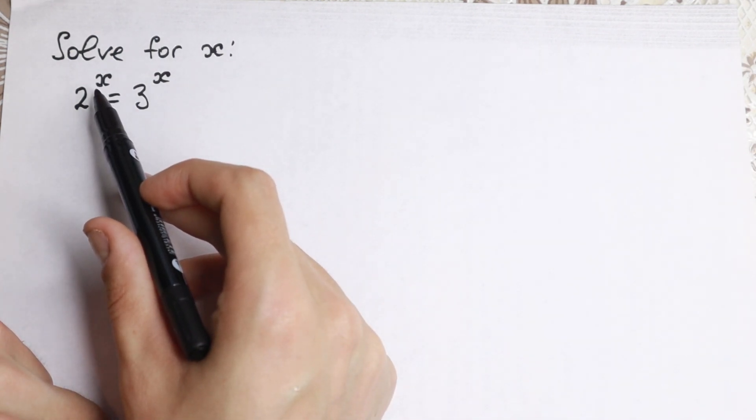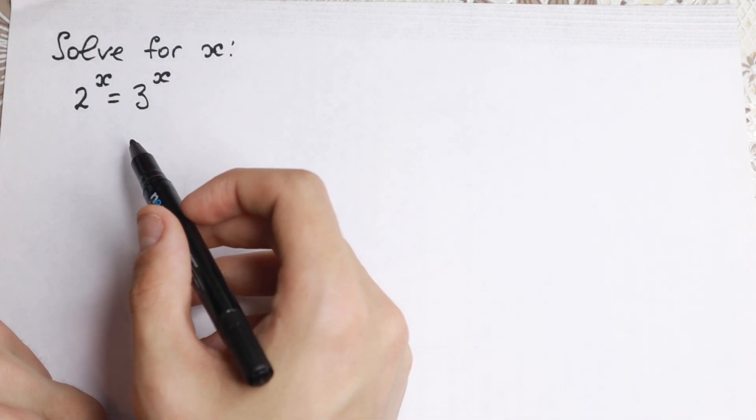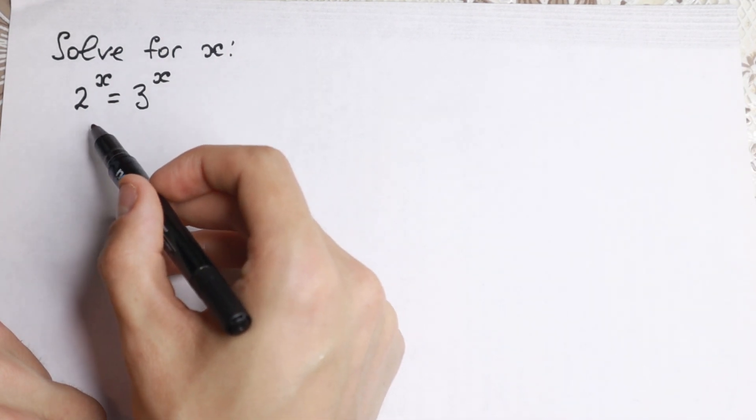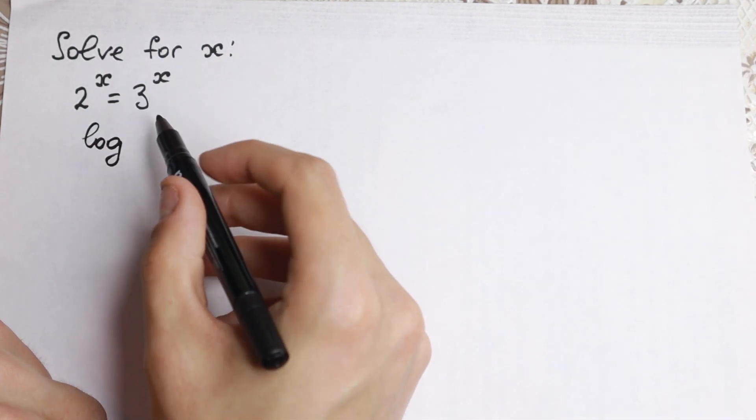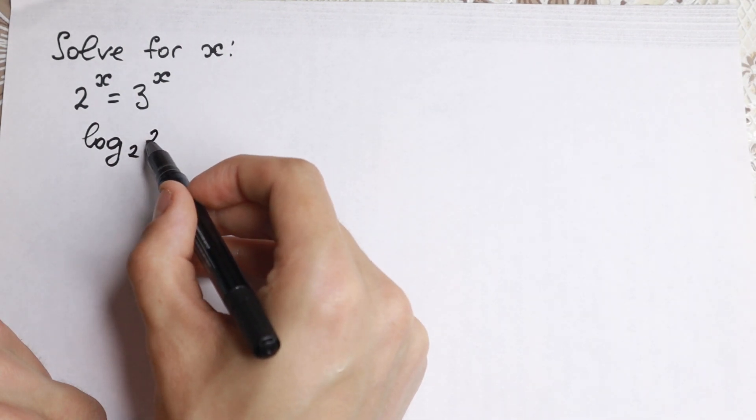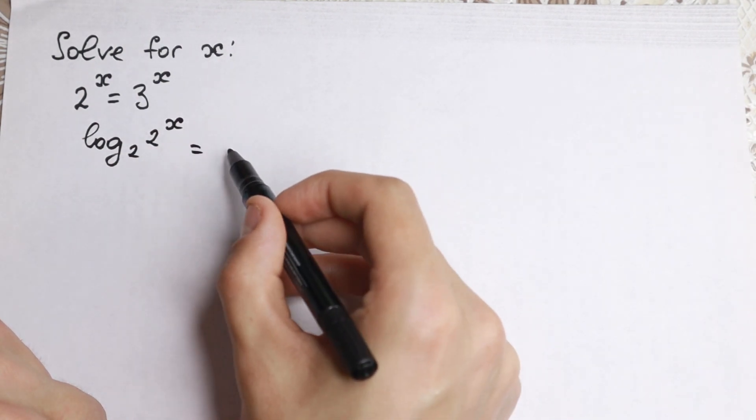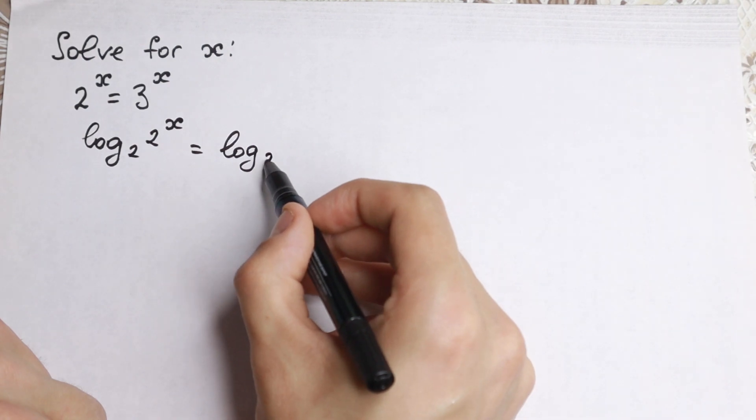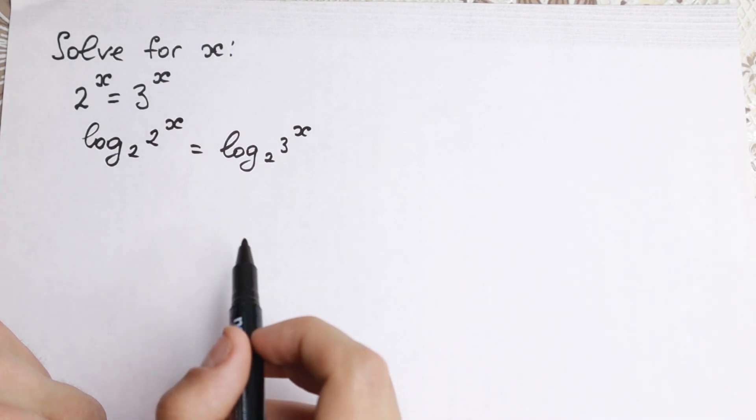If we have an exponent, if we have power, it's really good to take log from both sides. Let's work with base 2. So log base 2 of 2^x equals log base 2 of 3^x.